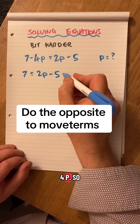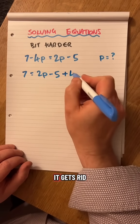so I'm going to go 7 equals 2p minus 5, that's a minus 4p, so I'm going to add it to the other side, it gets rid of it on the other side.